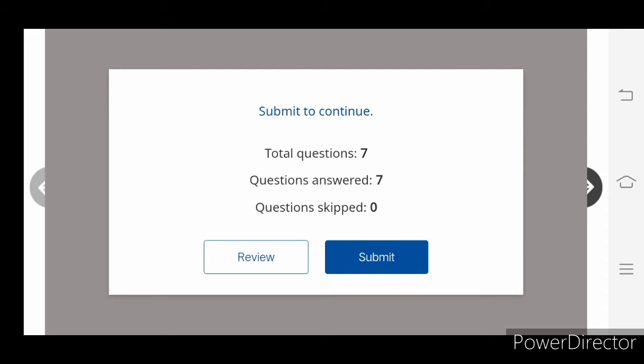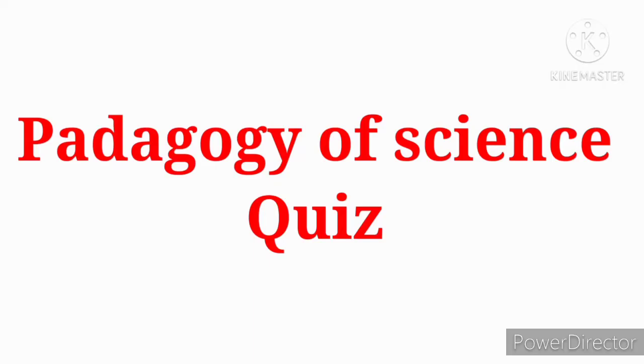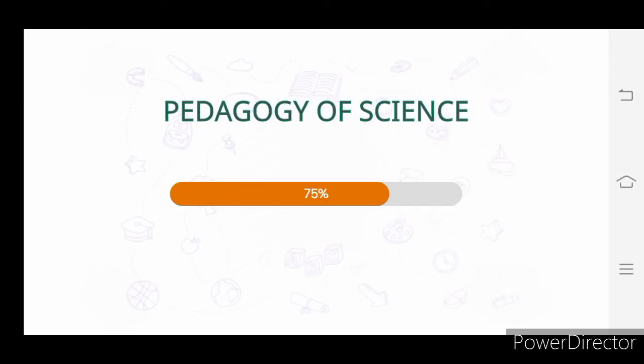Total question 7, question answered 7, question skipped 0. So submit. It's a quiz. Pedagogy of science. So the quiz of it is very important. We're going to do it.